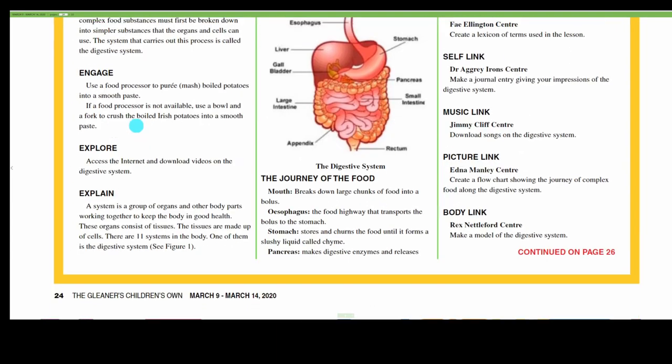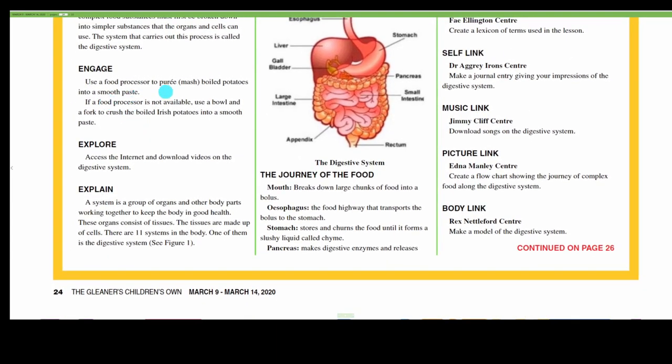Engage. Use a food processor to puree or mash boiled potatoes into a smooth paste. If a food processor is not available, use a bowl and a fork to crush the boiled Irish potatoes into a smooth paste.